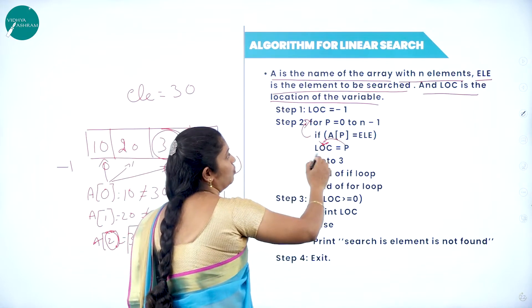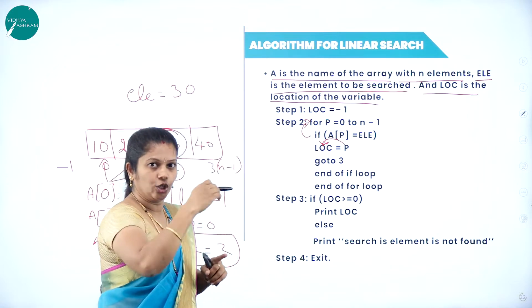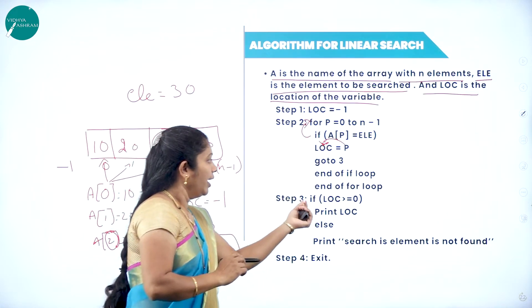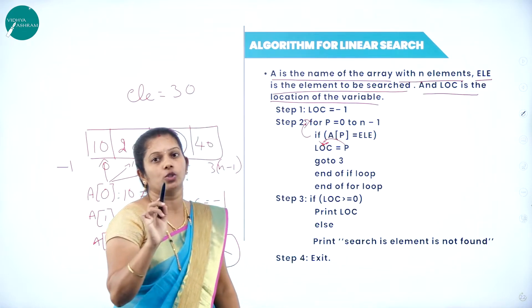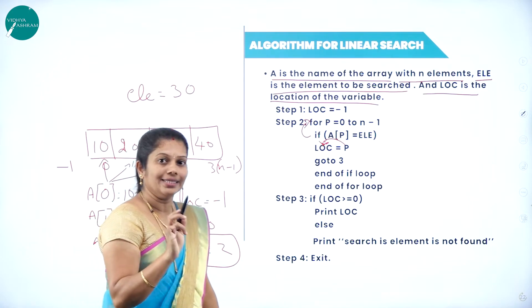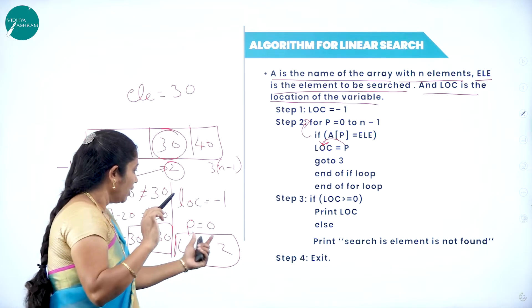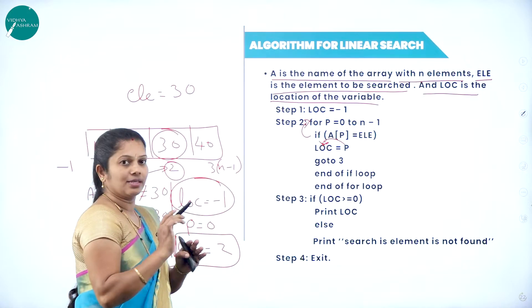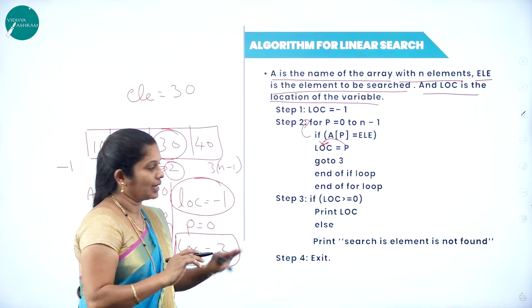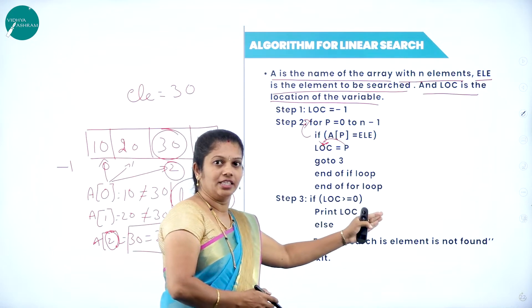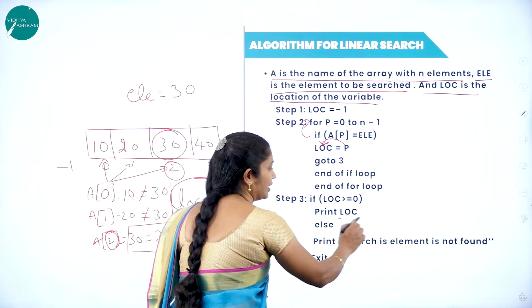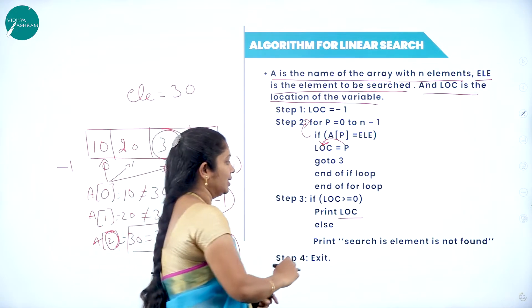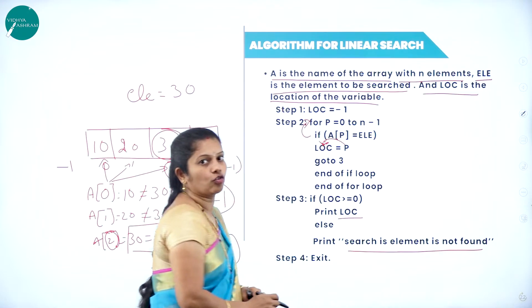The final conclusion: the search element 30 is found in location 2. End of the if loop, end of the for loop. If LOC is greater than or equal to 0, the search element is present — print the location where the element is found. Otherwise, print that the search element is not found.